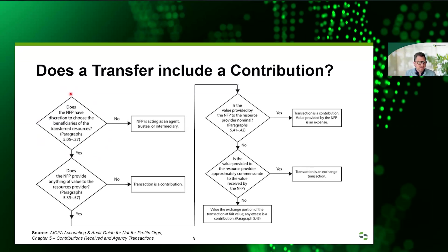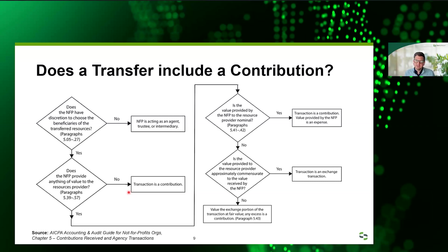The first question really is: does the not-for-profit have the discretion to choose the beneficiaries of the transferred resources? If the answer is generally no — we can't choose who it goes to, we're just taking it in and giving it out — then you're acting in an agency type capacity, so it would not include a contribution. If the answer is yes, we do have power to choose the ultimate beneficiaries, then the next question would be: do you provide anything of value back to the resource provider? If the answer to that is clearly no, then squarely we have a contribution.